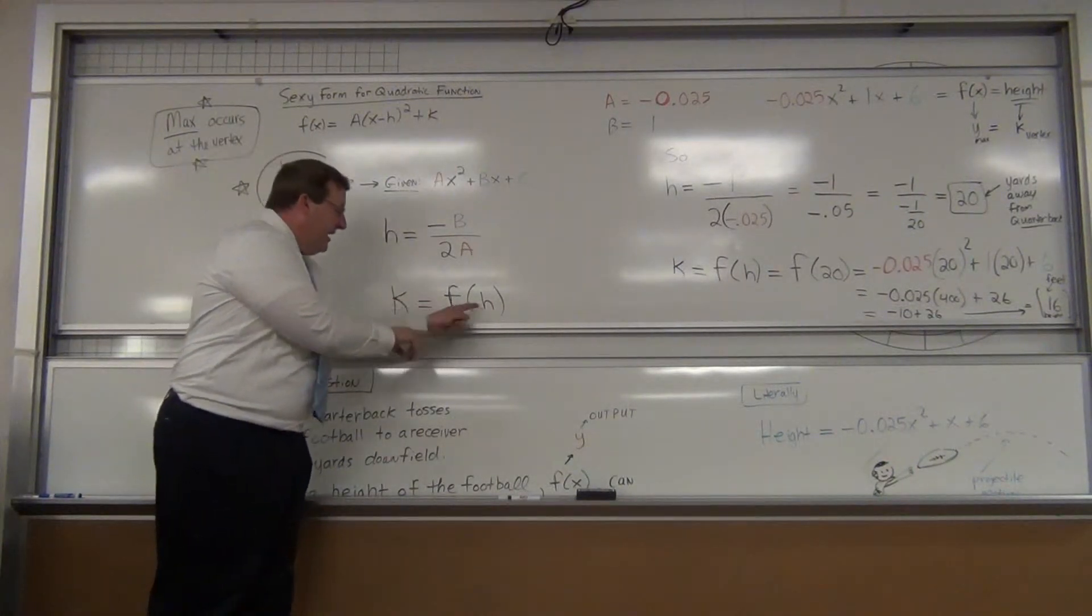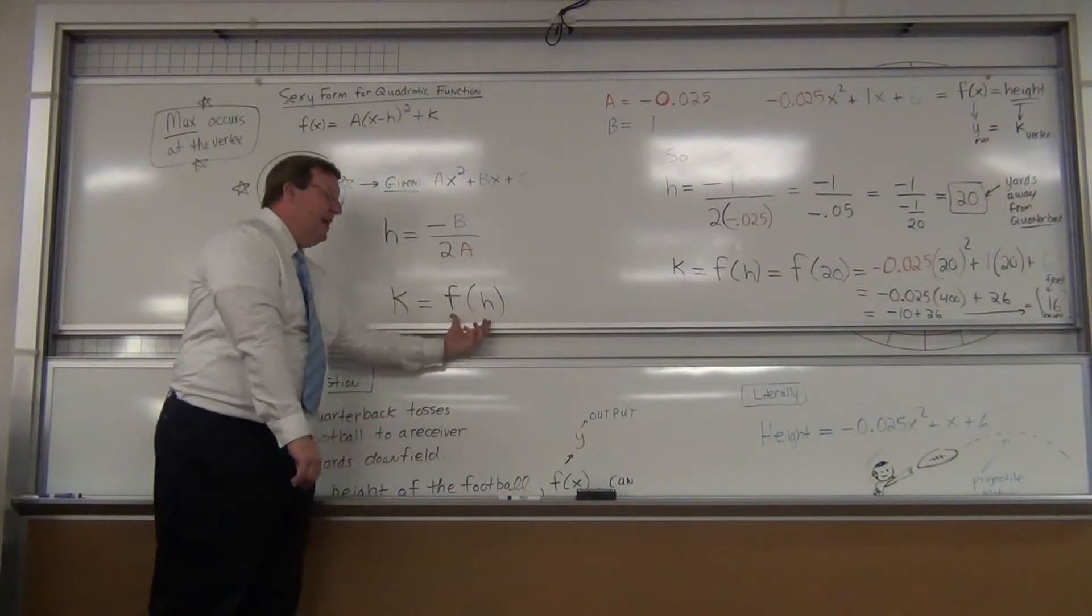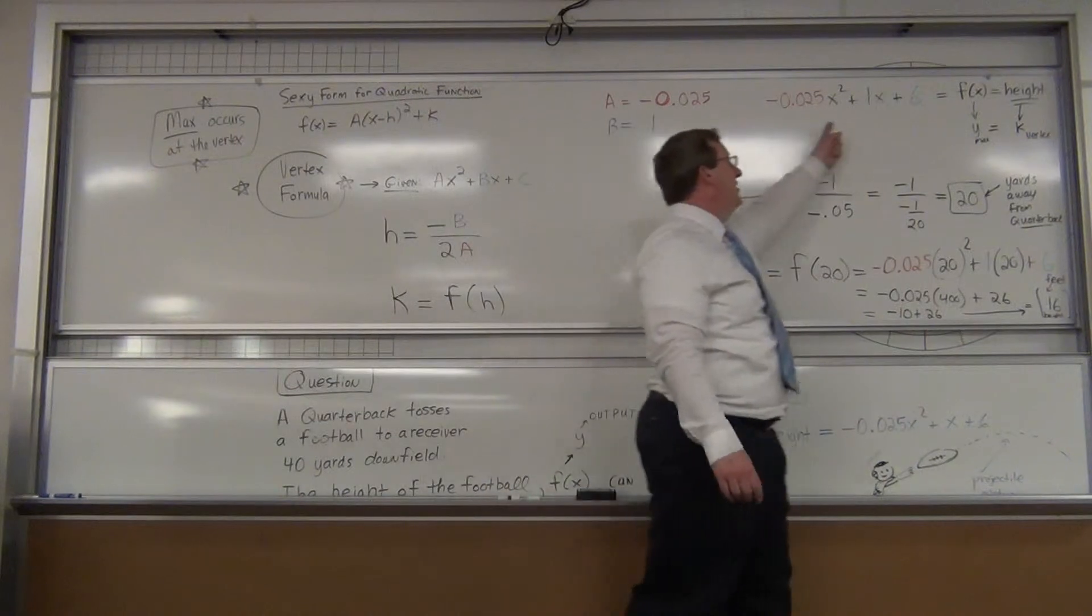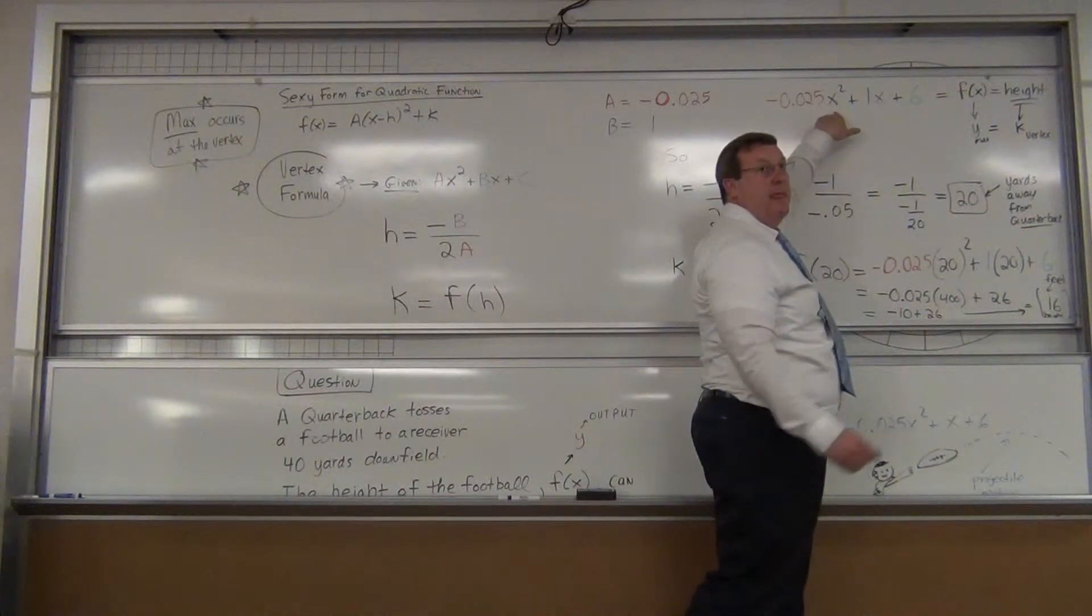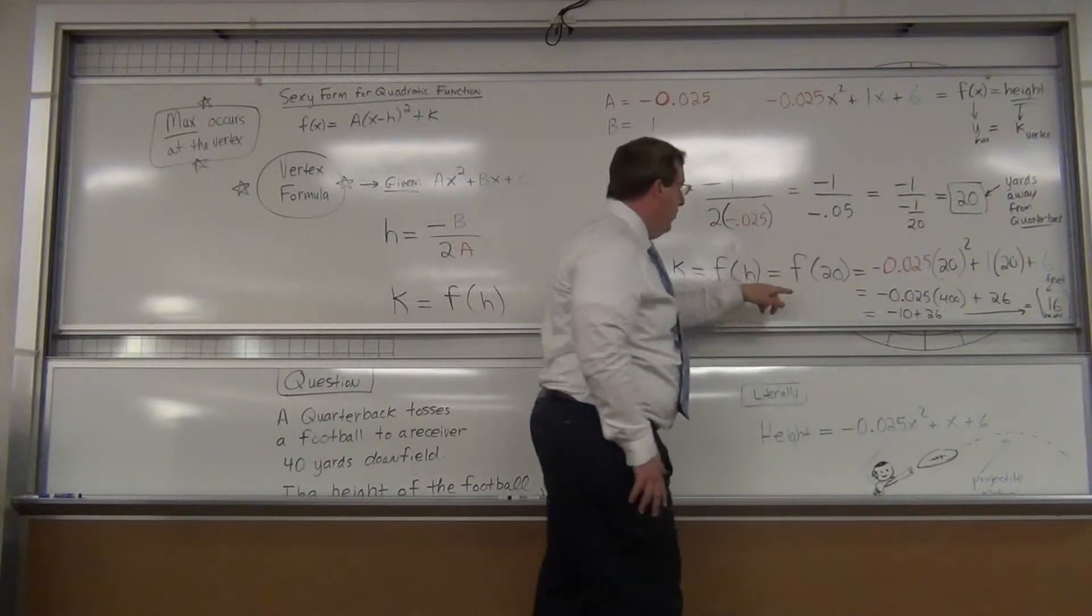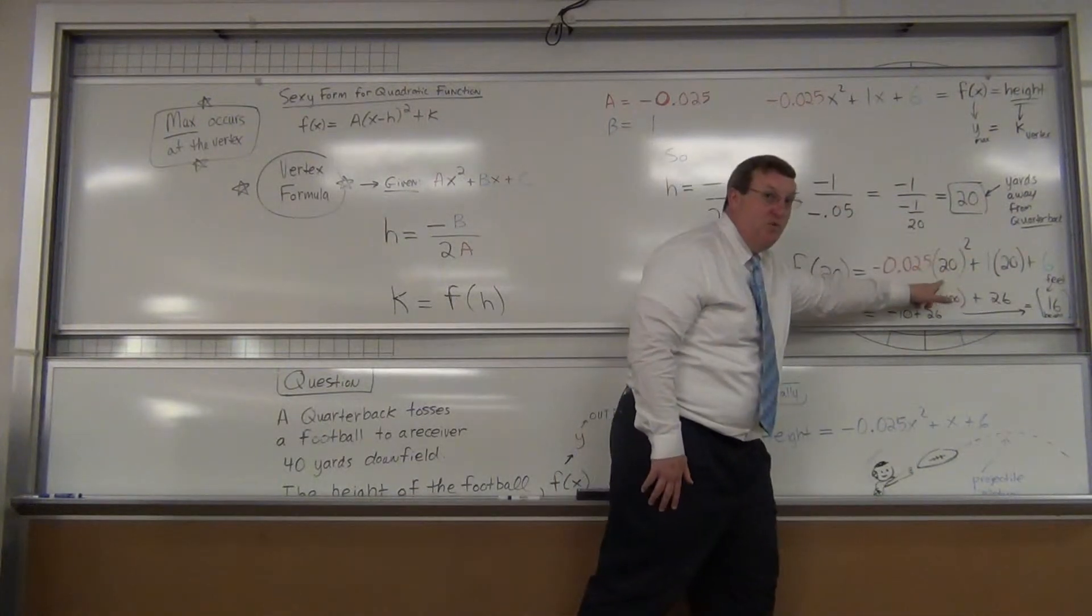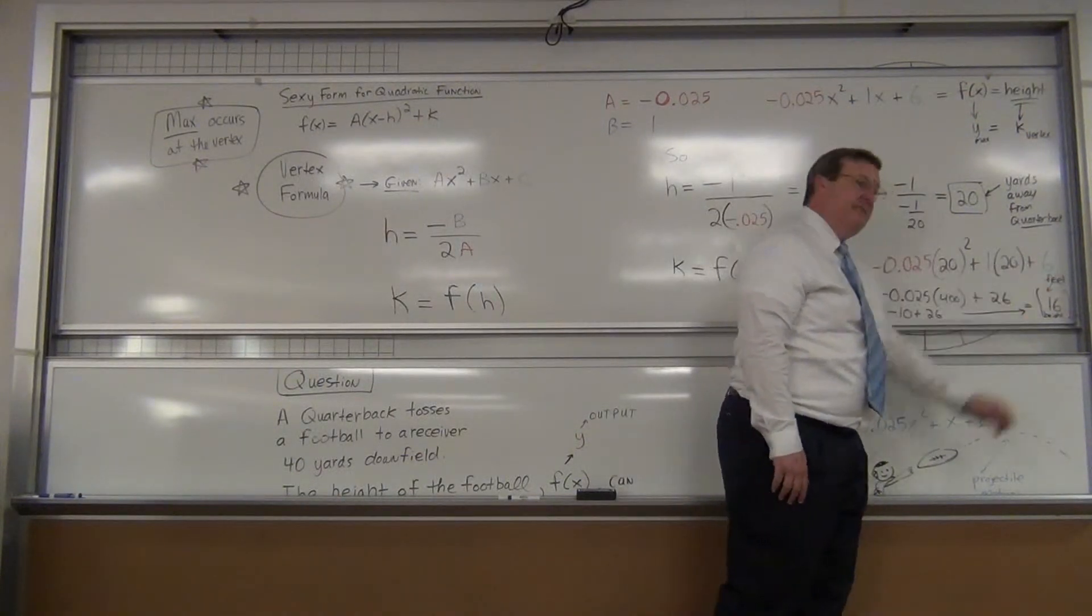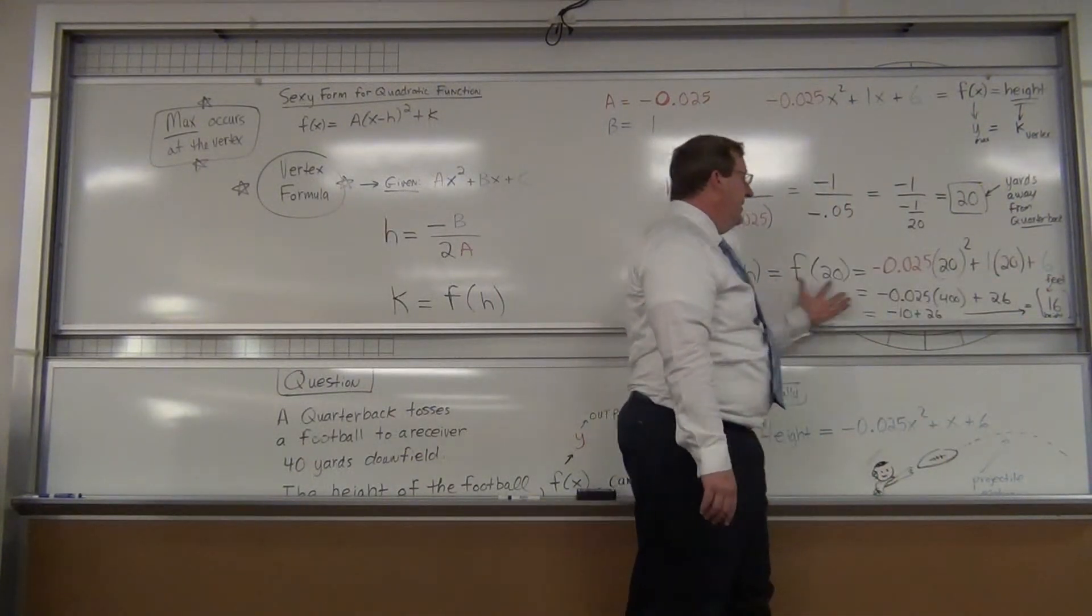It says plug in whatever you find for your h, plug it into the original function. Well here's the original function: wherever you see an x, plug in 20. So we plugged in 20 wherever we saw the x. That's where you get the 20 squared—x squared—plug it in, plus 1 times 20 plus 6.